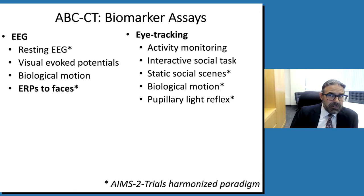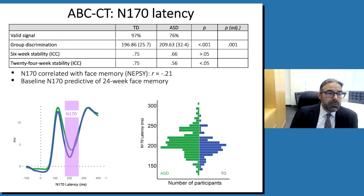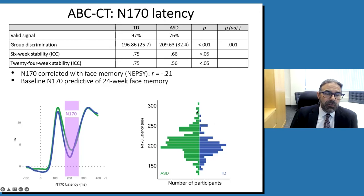In terms of the N170, we saw what we predicted: N170 latency was slower in people with autism. We learned that it's fairly reliable — an intraclass correlation coefficient of 0.66 over the short term, a little lower over the longer term. We saw things consistent with prior findings in terms of relationship to the phenotype, specifically a relationship with face memory, and also predictive value in estimating what face memory would be 24 weeks down the line. Looking at a histogram, people with autism shown in green and typically developing kids shown in blue, many overlap — this is not going to be a diagnostic test for autism. But what's interesting is the tail of the distribution, where values are almost exclusively true of autistic people.